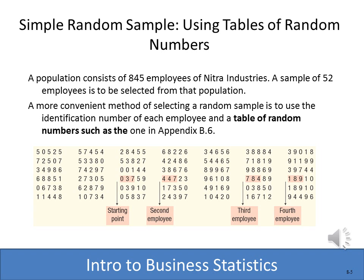With our starting point, the first number selected is employee number 37. Going to the right, the next is employee 447. The next column shows 961, but since there's no employee 961, we skip it. We then take 784, then 189, and continue until all 52 employee numbers are selected. If a three-digit number is invalid, like 999 or 961, we simply skip over it and go to the next one.